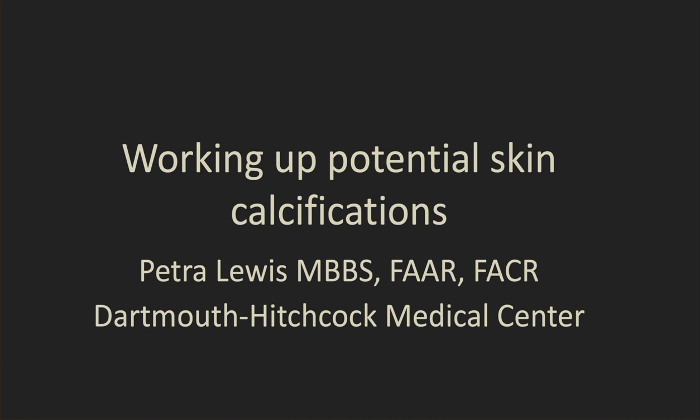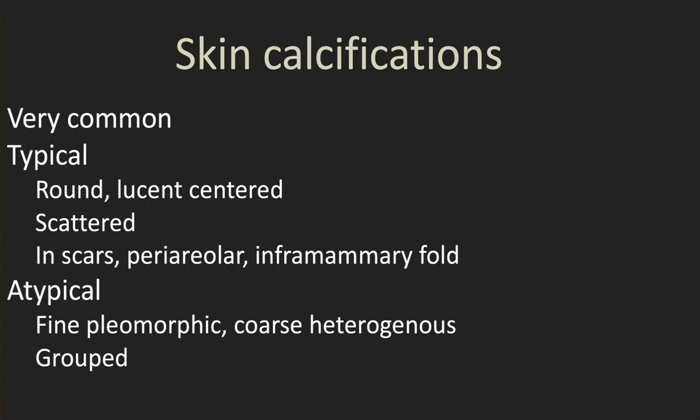Quick video on showing you how to work out potential skin calcifications on mammography. Skin calcifications are very common. They're typically round or lucent-centered, which are pretty much pathognomonic, generally scattered, but they can be more localized within scars, the periareolar area, or the inframammary fold. Sometimes they can be more atypical looking, more concerning — a little more pleomorphic or coarse heterogeneous — and they can be more focally grouped.